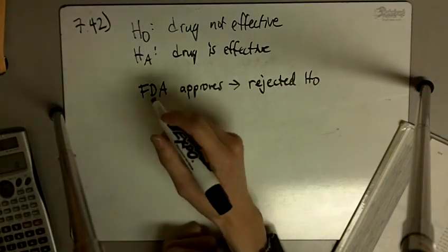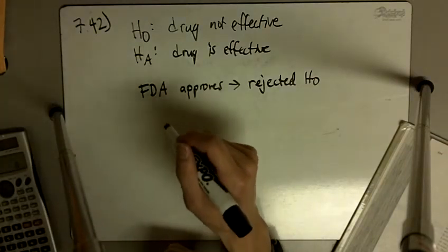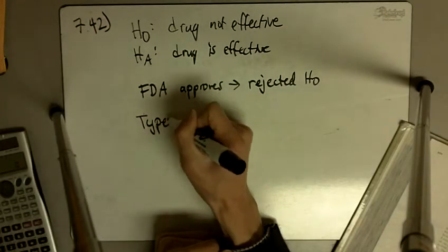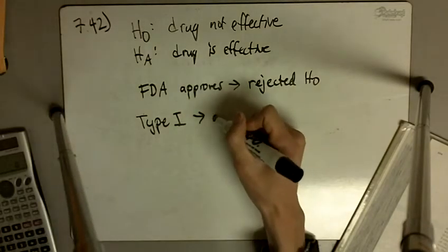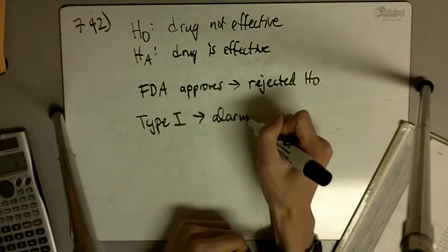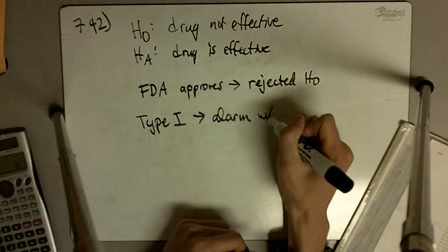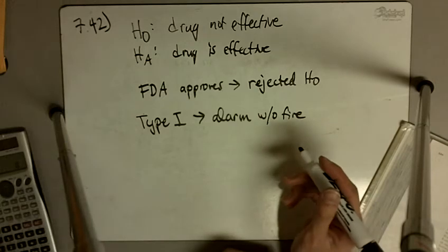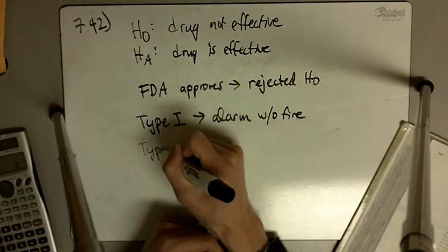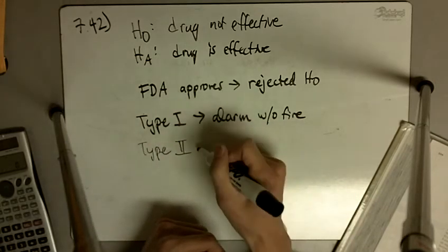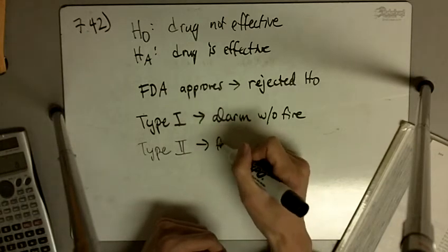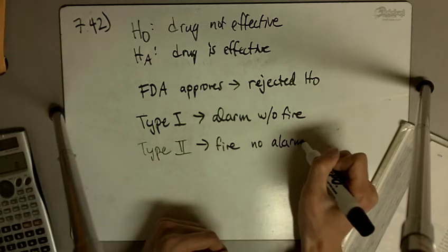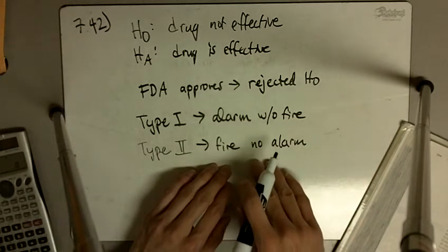So what type of error, Type I or Type II, could not have possibly been made? Remember, Type I is alarm without a fire - that means we rejected the null hypothesis when we shouldn't have. And Type II is there's a fire and no alarm - it means we did not reject the null hypothesis when we should have.